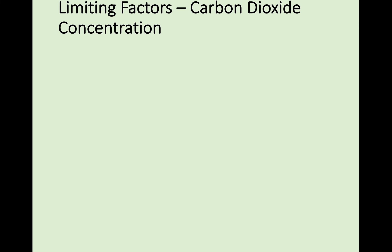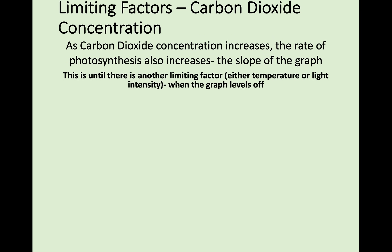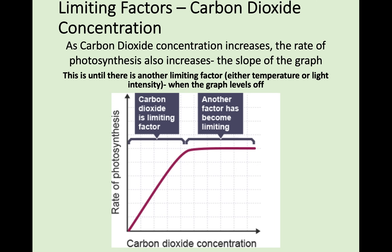Once you remember what these are, we're going to go through them one at a time and show you the graphs you can sometimes see in the exams. For carbon dioxide concentration — if the carbon dioxide concentration is too low, the rate of photosynthesis is too low as well. As carbon dioxide concentration increases, so does the rate of photosynthesis, up until the rate starts to level off. At that point on the graph, carbon dioxide concentration is still increasing, so it is no longer the limiting factor — something else is holding back the reaction. You would need to know that it has to be temperature or light intensity — quite a common exam question.